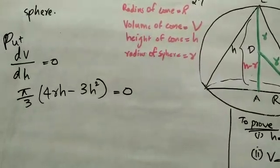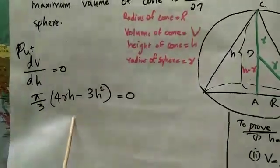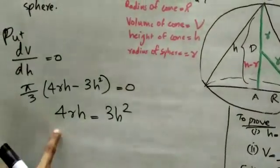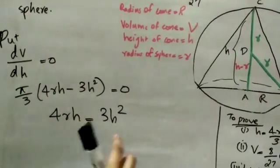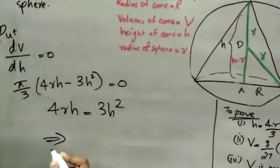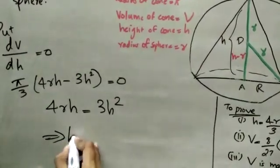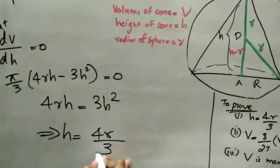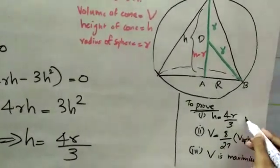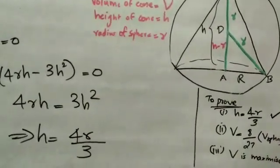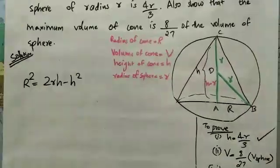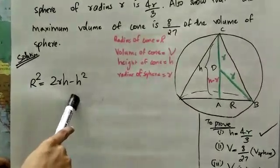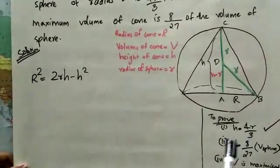Setting dV/dh = 0: (π/3)(4rh − 3h²) = 0, which gives 4rh = 3h², so h = 4r/3. This confirms the first result. Substituting h = 4r/3 back gives R² = 2r·(4r/3) − (4r/3)² = 8r²/9.